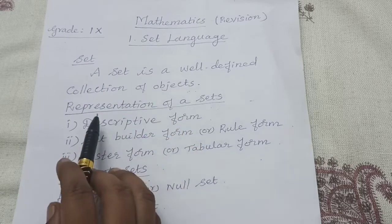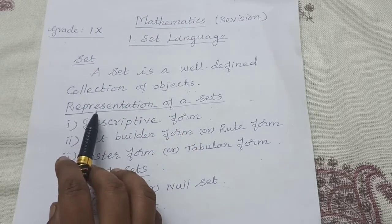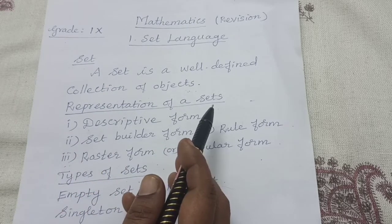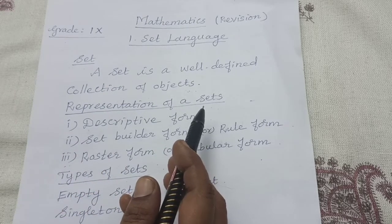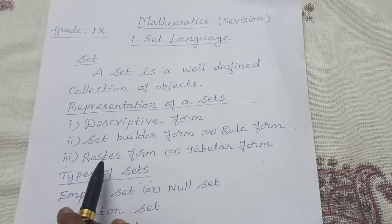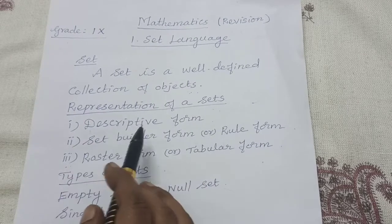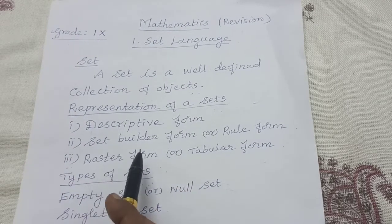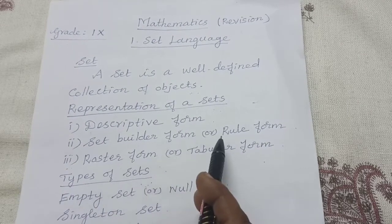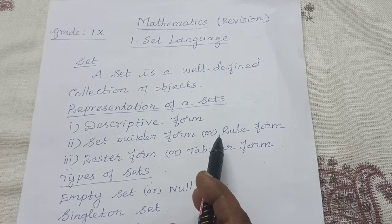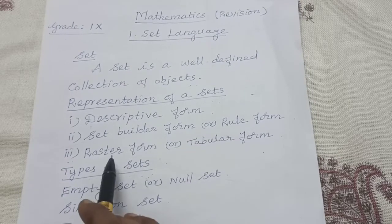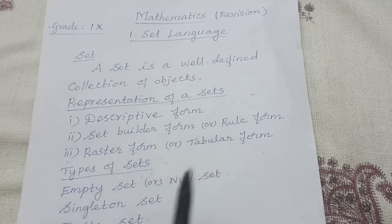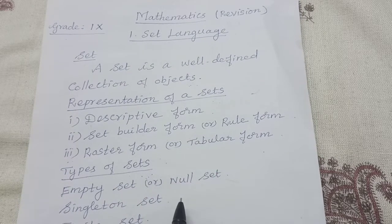In the last class we revised the representation of a set. First one: descriptive form. Second one: set builder form. Third one: roster form or tabular form.